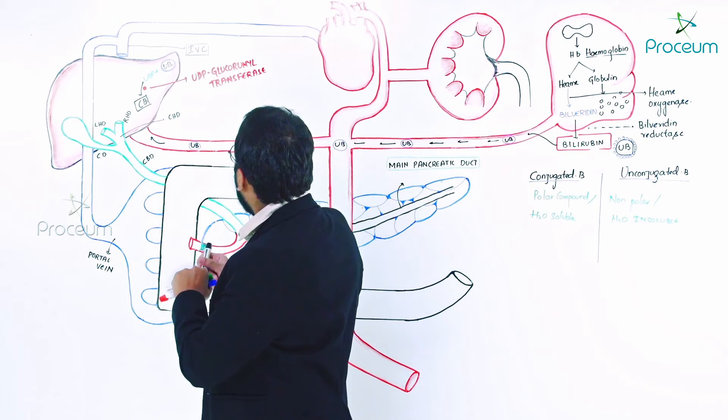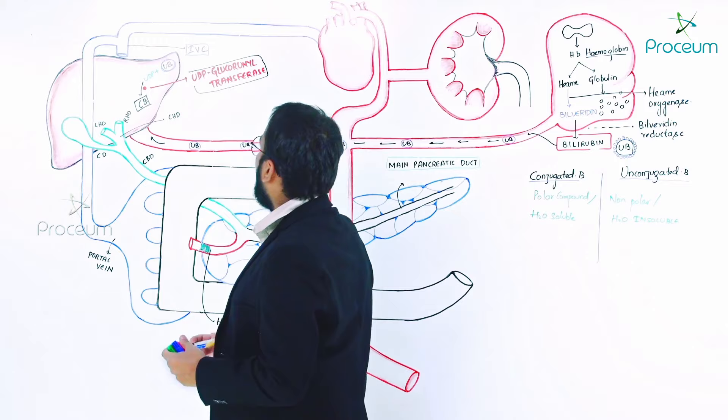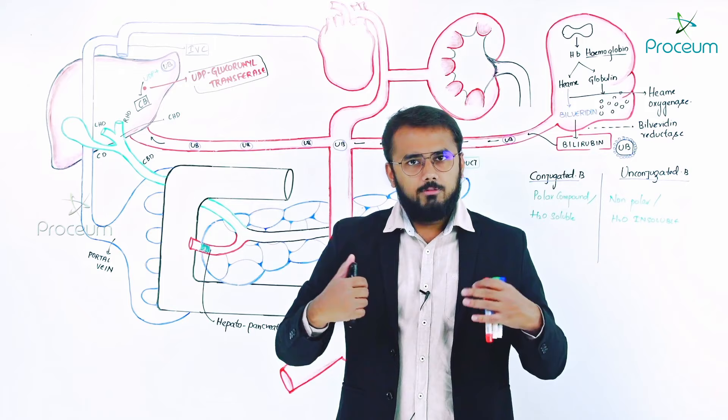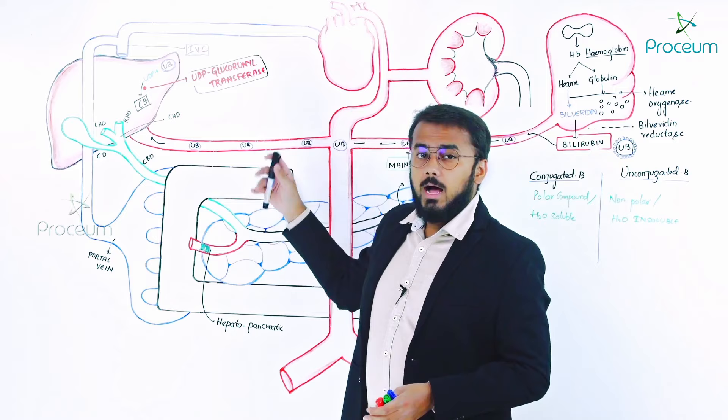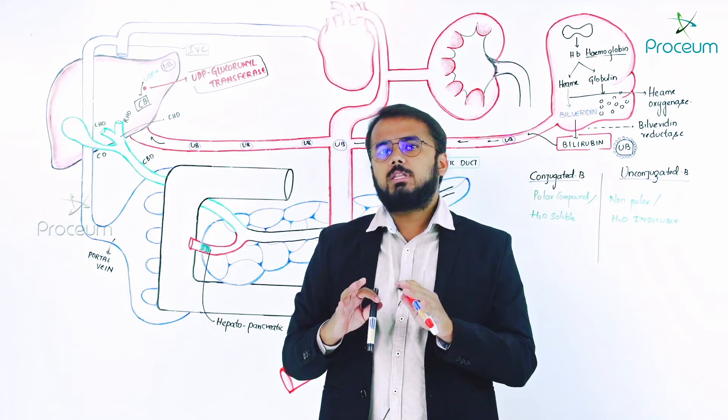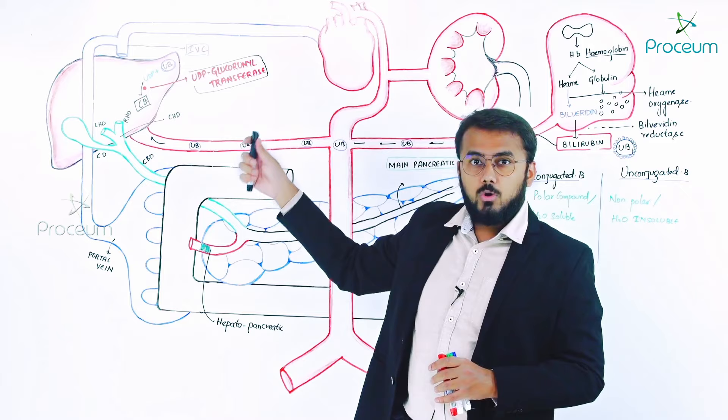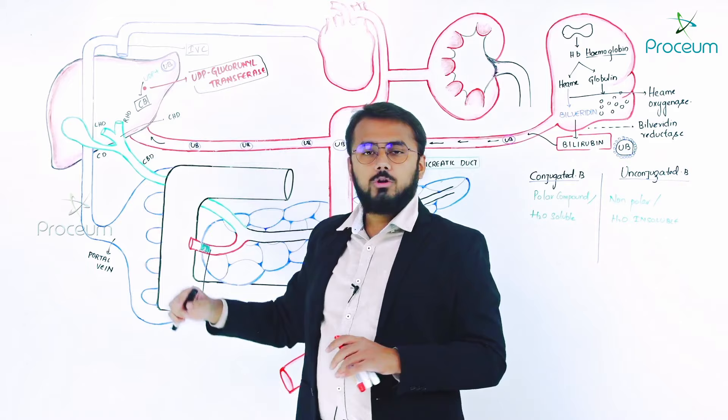UDP glucuronosyltransferase is very important. Many pathologies regarding jaundice in the neonate are related to this enzyme. UDP glucuronosyltransferase converts unconjugated bilirubin to conjugated bilirubin.